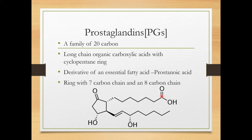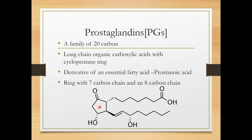The structure of prostaglandin has a cyclopentane ring with a seven-carbon chain on one side and an eight-carbon chain on the other side. The ring itself contains five carbons, so the total is eight plus seven plus five, which equals 20 carbon atoms. This is the structural basis of prostaglandin.